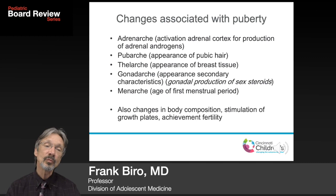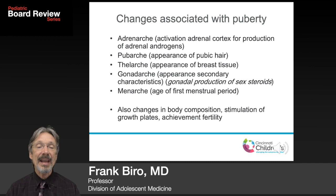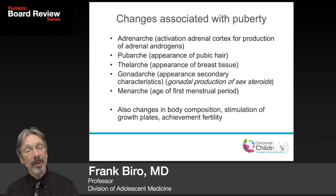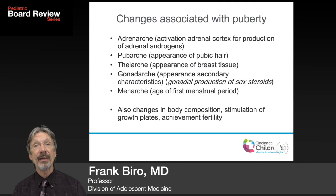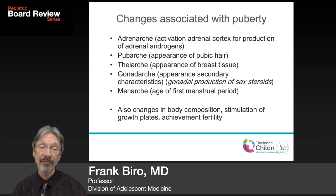Thelarche is often considered the onset of puberty. Gonarche is the appearance of secondary sexual characteristics and also refers to the gonadal production of sex steroids. A published paper found that obese girls with palpable glandular breast tissue do not show an increase in gonadotropins early in puberty, suggesting their growth spurt and breast development result from conversion of adrenal androgens into estrogens via aromatase within the adipocyte.